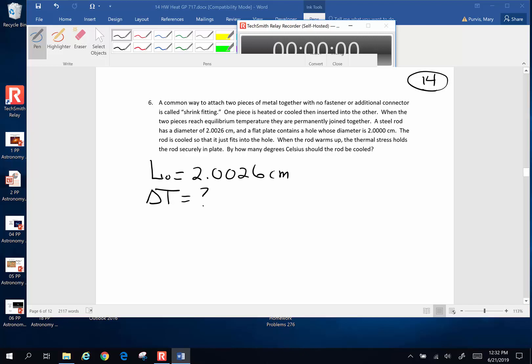So this is my original length. The change in length is going to be the difference between the 2.0026 centimeters minus the 2.000 centimeters. So that's going to be 0.0026 centimeters. That's going to be my change in length. And this is steel, so we're going to use that coefficient of linear expansion, 12 times 10 to the negative 6th per degree Celsius.